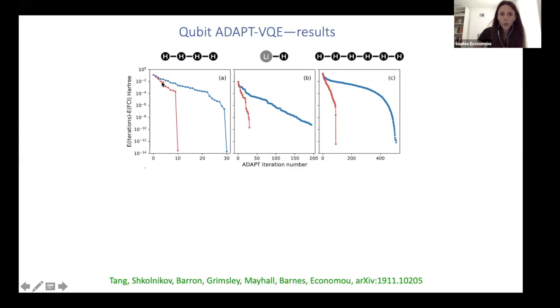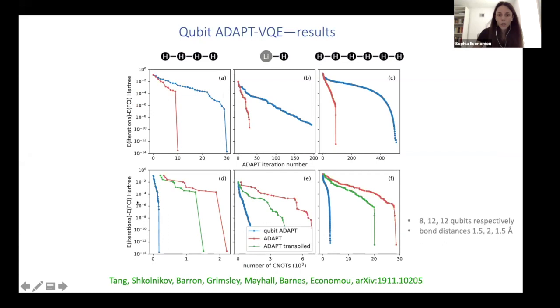So you might be tempted to see this as better, but then if I ask how many CNOTs do I need, which is the currency in these NISQ processors, actually the qubit ADAPT does dramatically better. And I should mention here that we didn't try to compile or optimize qubit ADAPT. So this is more to be used as a comparison and not so much as an absolute performance.